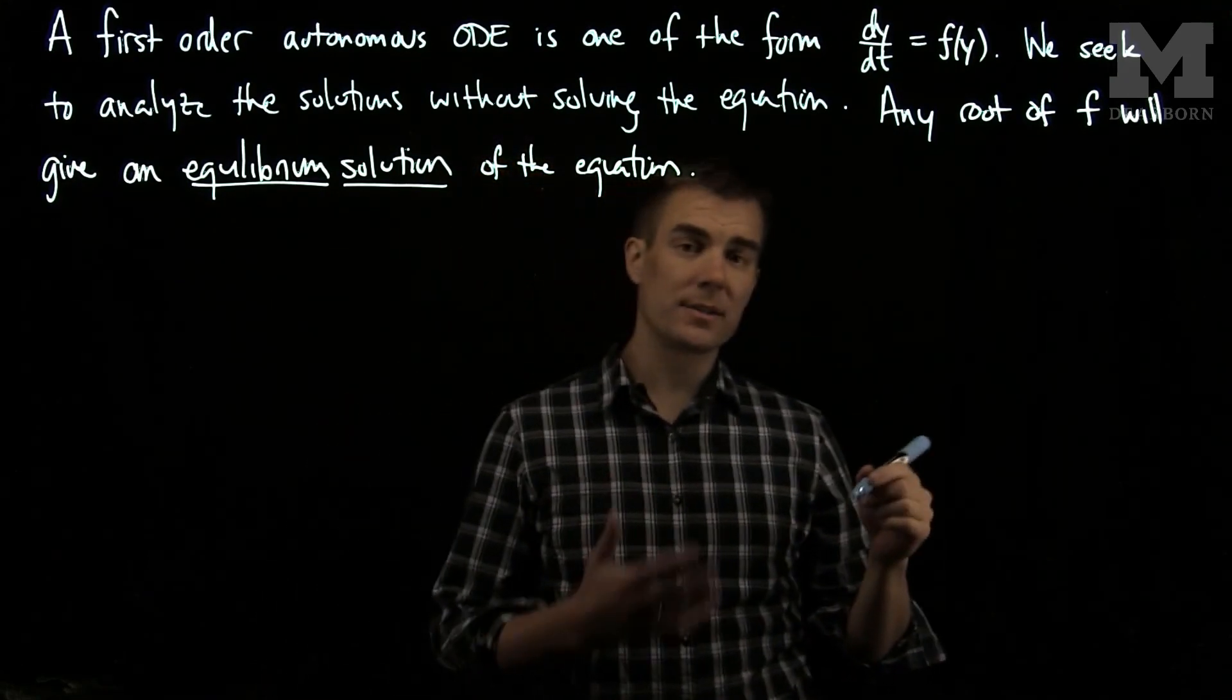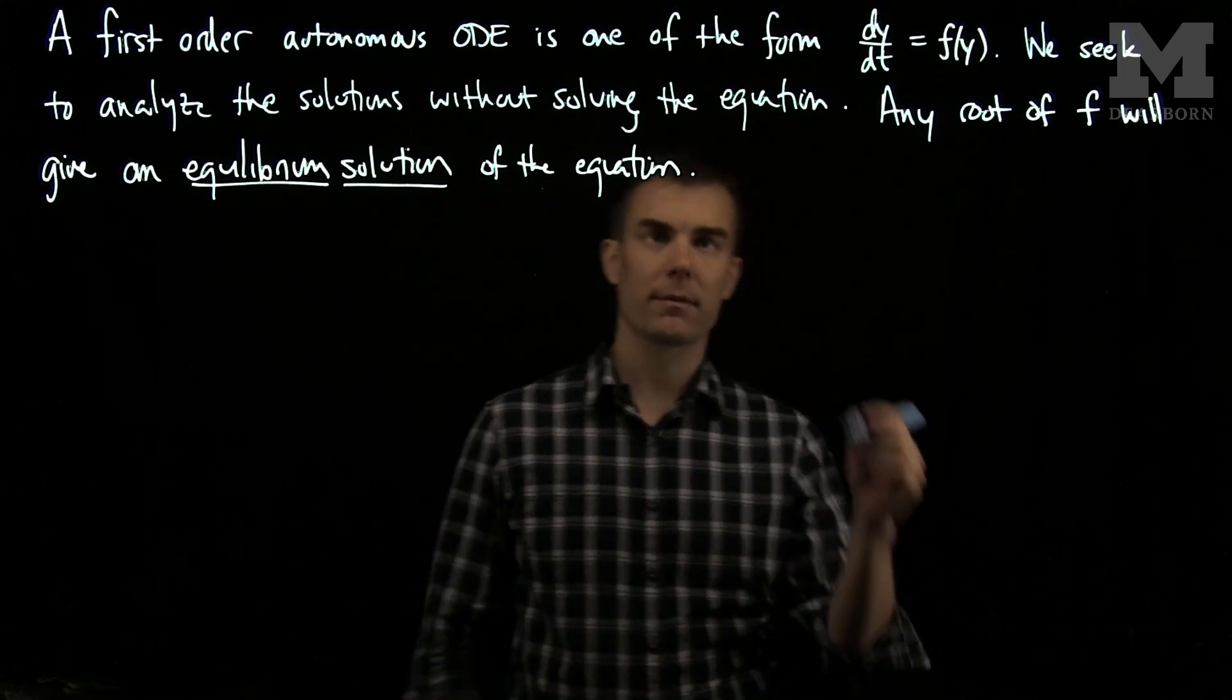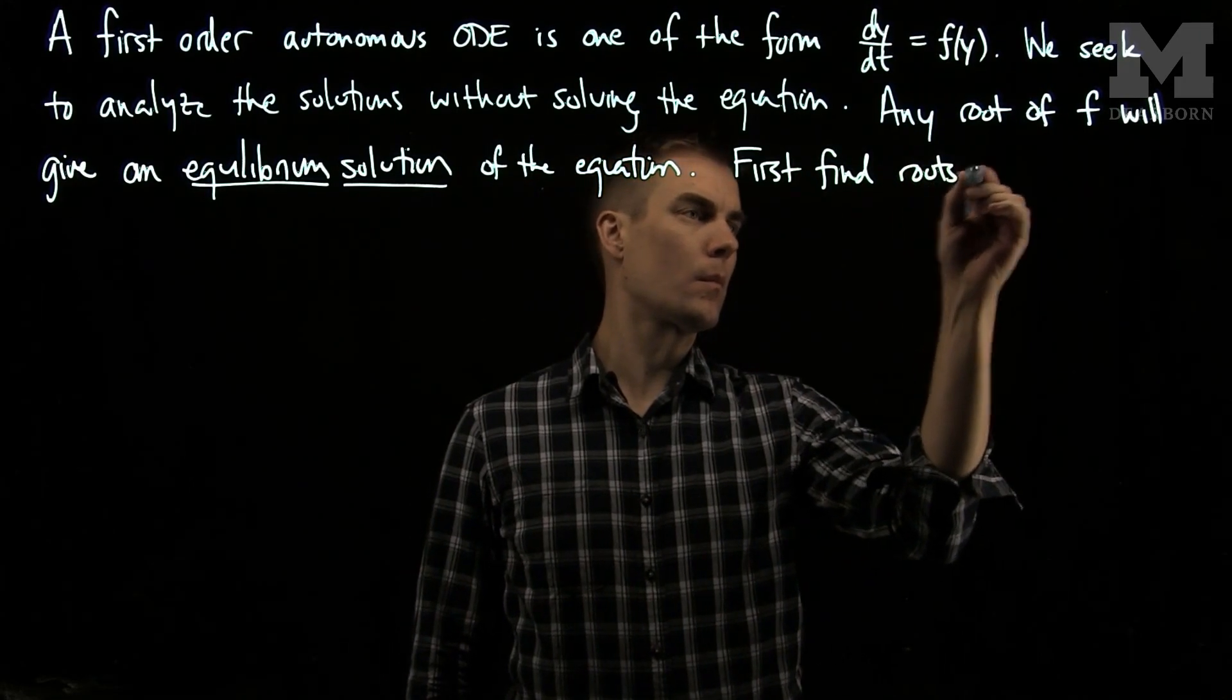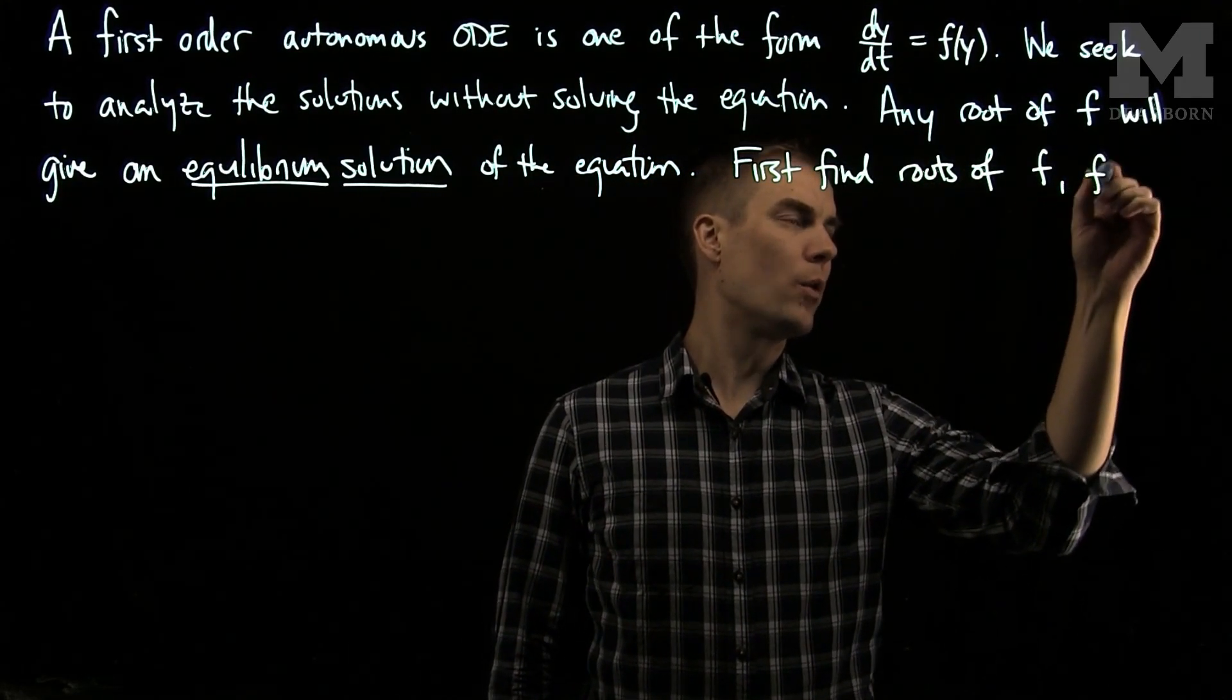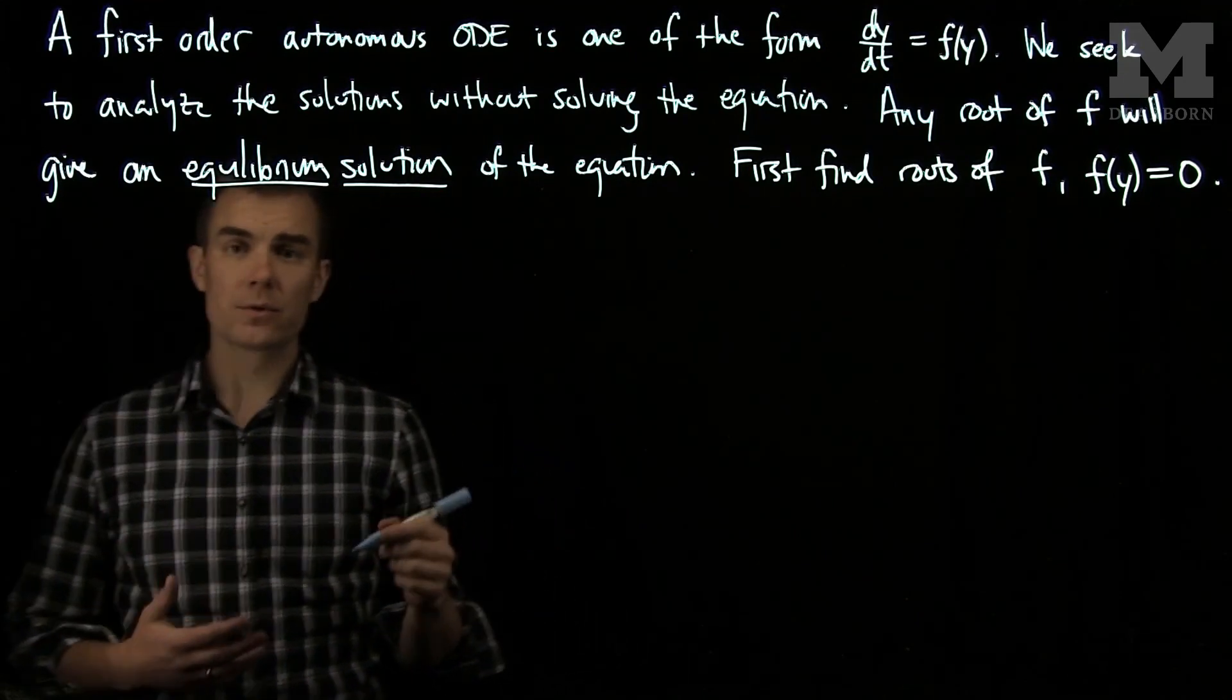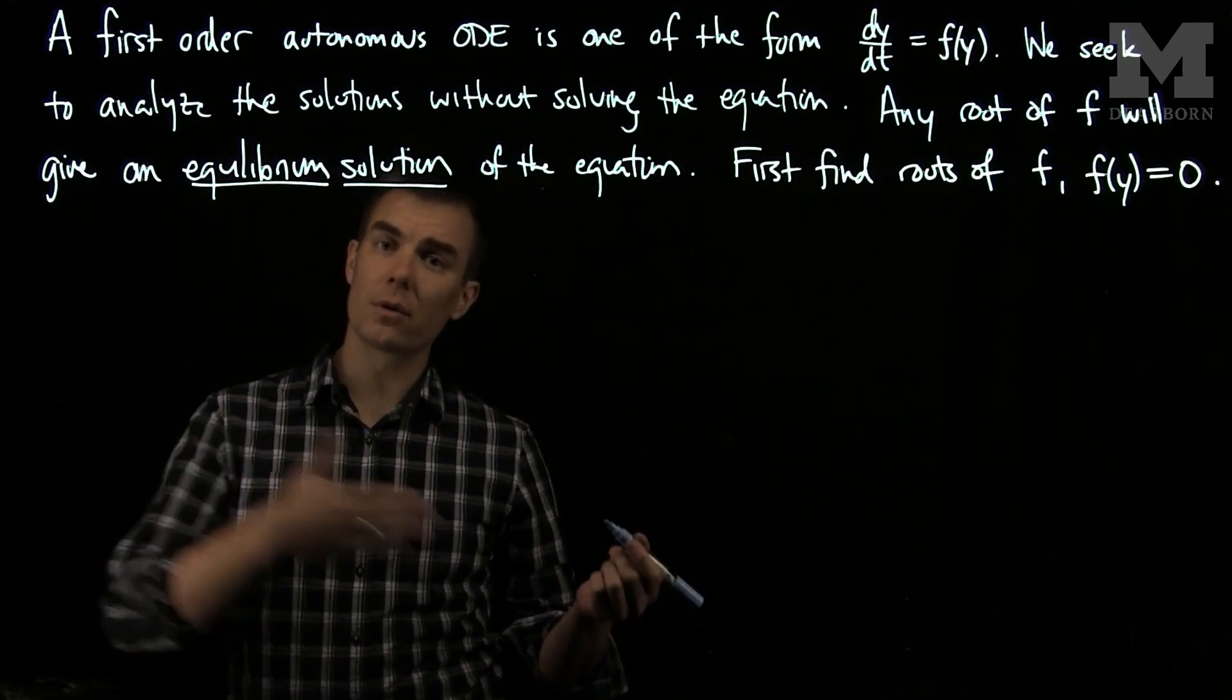When we analyze these differential equations, we first seek to find the roots of f, i.e., we want to solve f(y) = 0. After we find the roots, we plot a sign chart for the function f, and use the sign chart to determine the long-time behavior.